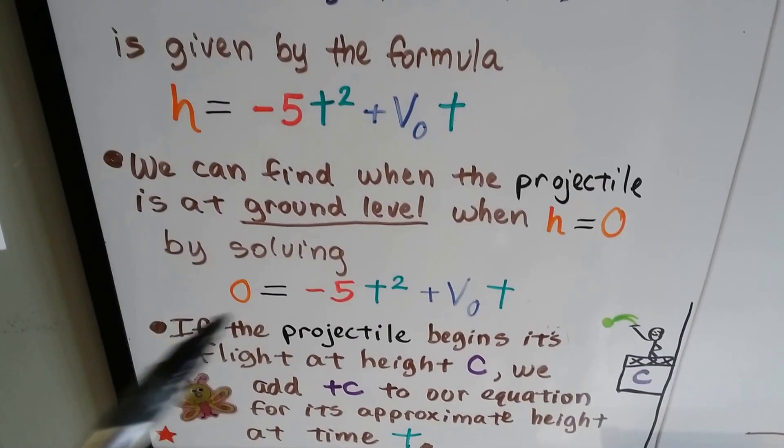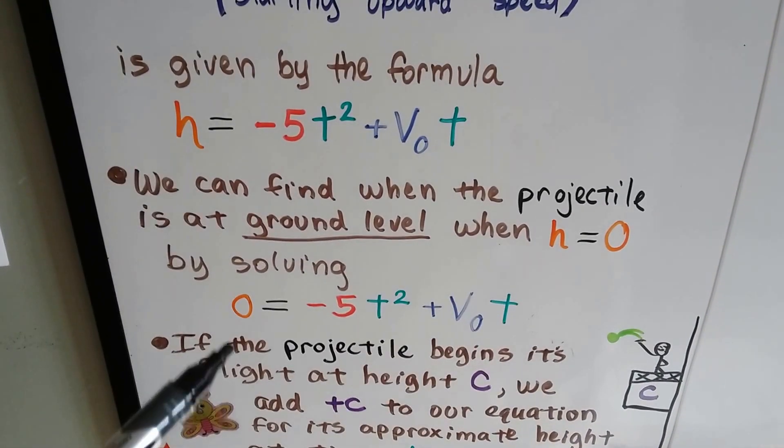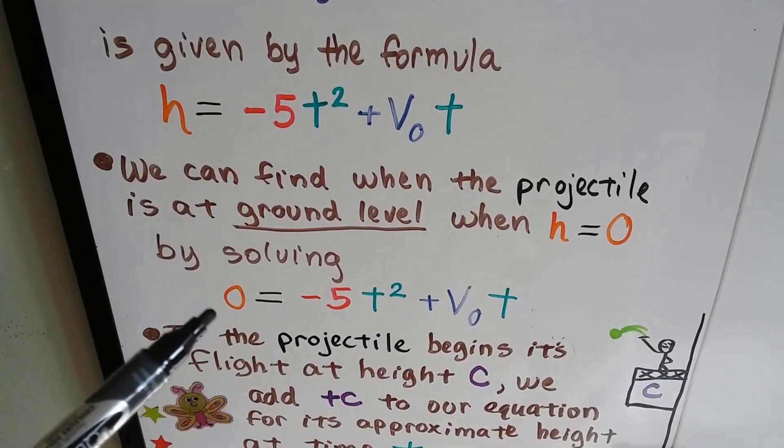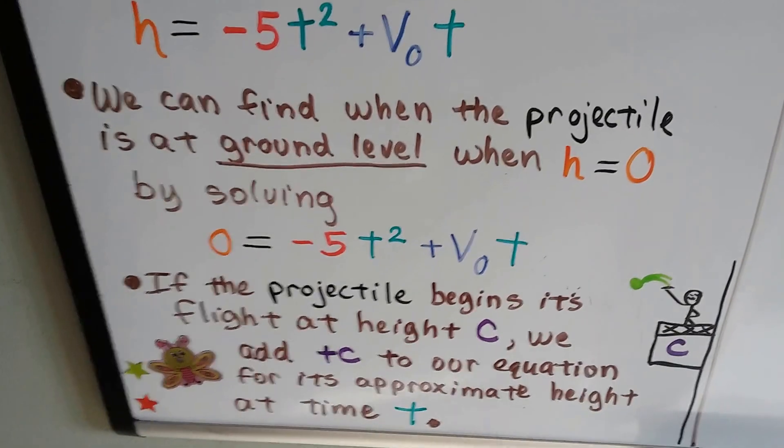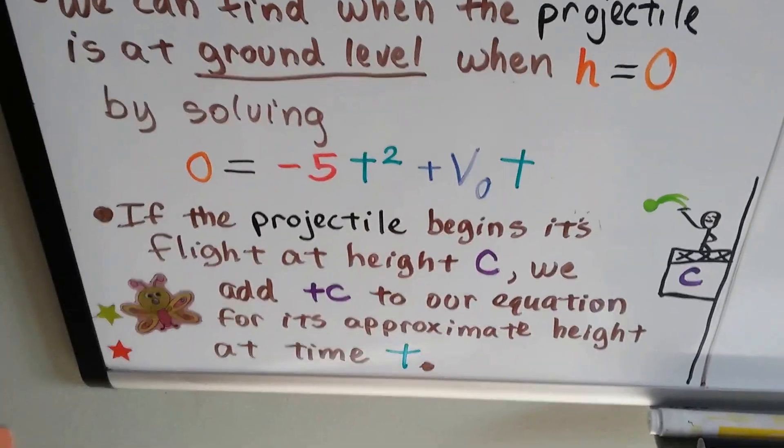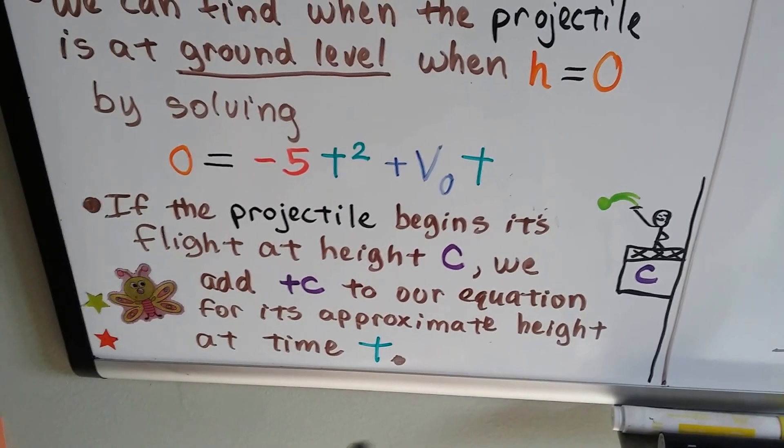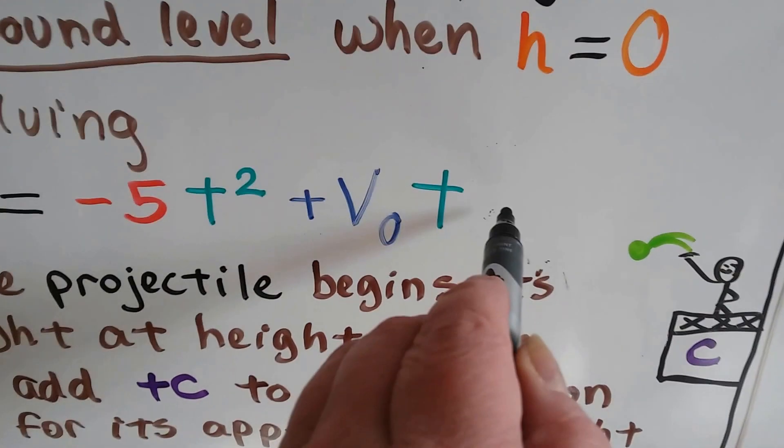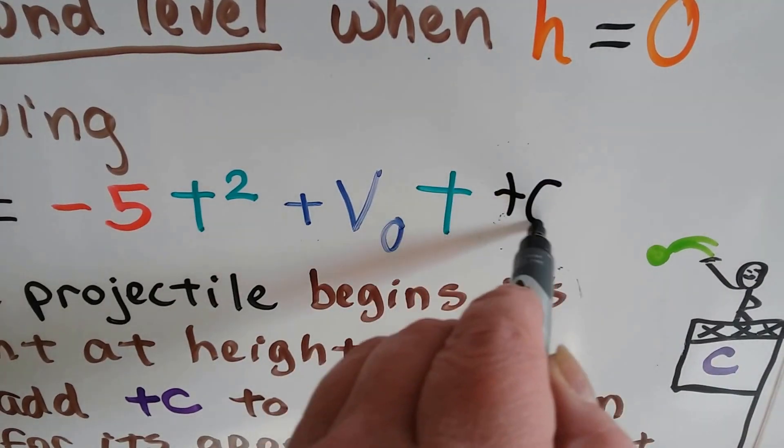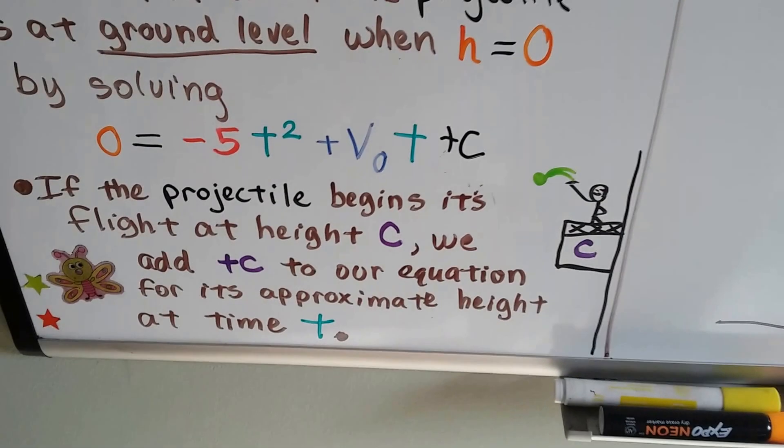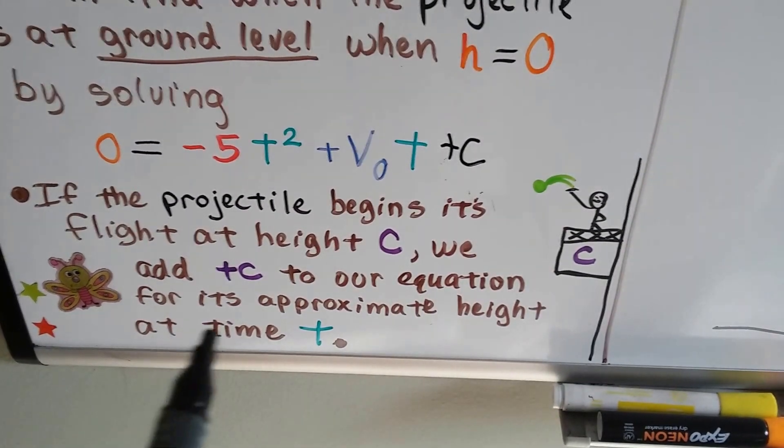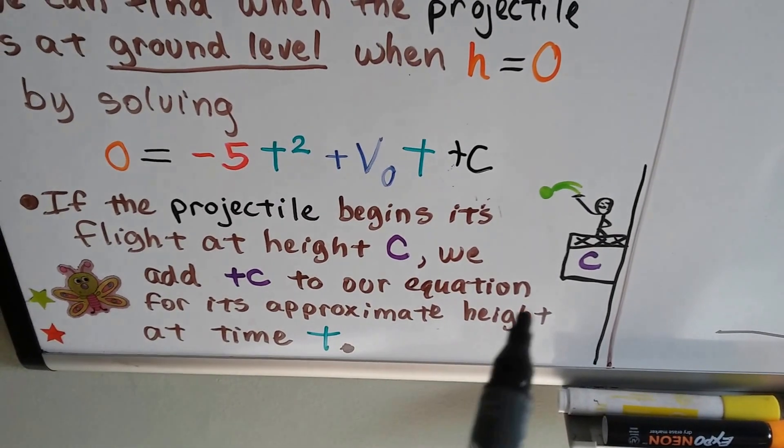h equals negative 5t squared plus v zero times t. We can find when the projectile is at ground level if h is set to equal zero, like this, and we solve it this way. But if the projectile begins its flight at a certain height c, we add a plus c back here on the equation for its approximate height at time t.